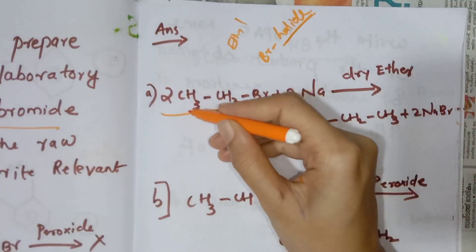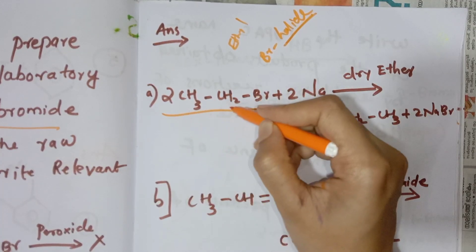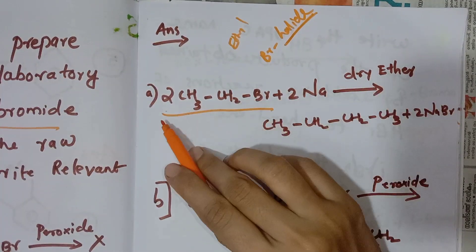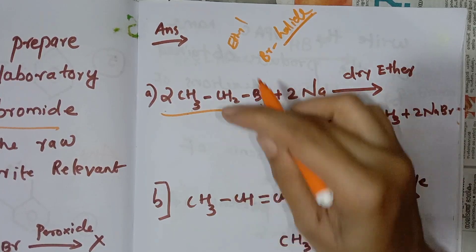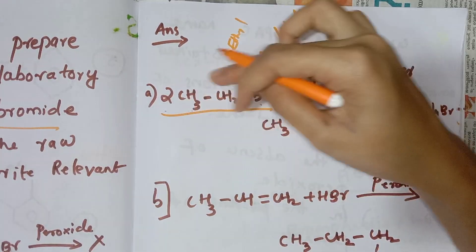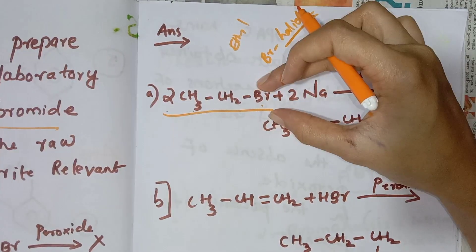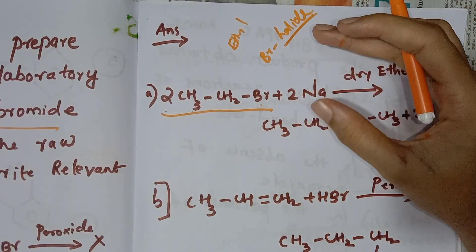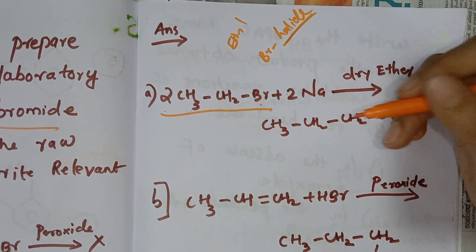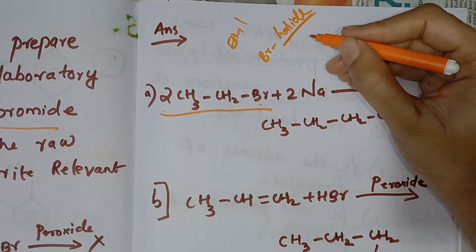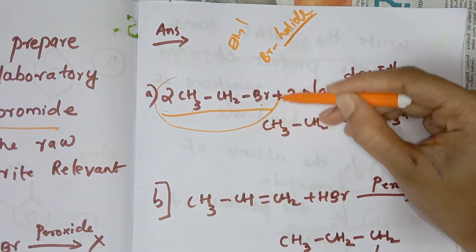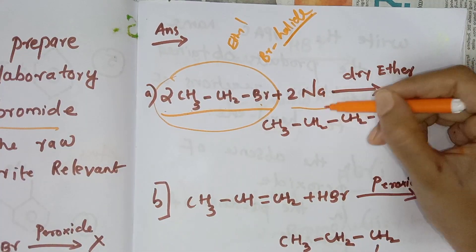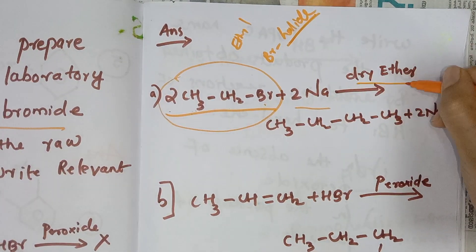Ethyl bromide has 2 carbons. The ethyl group is CH3CH2, so ethyl bromide is 2 CH3CH2-Br. This is the ethyl portion of bromide. Then we add sodium.